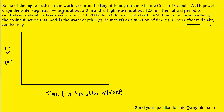The question notes that the lowest possible tide is going to be 2 meters. So on our y-axis we can make a mark at 2 meters and draw a horizontal dotted line. The highest possible tide is located at 12 meters, so we mark that on the depth axis and draw another horizontal dotted line.